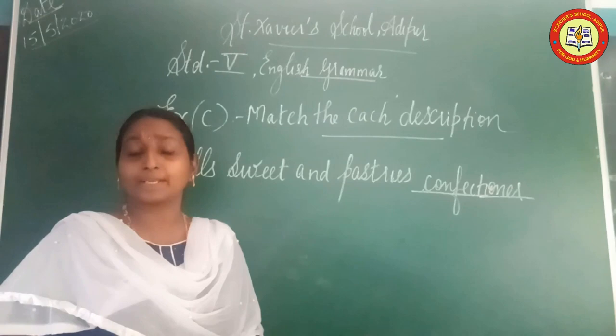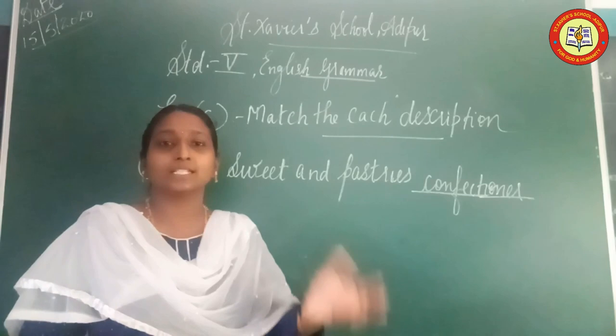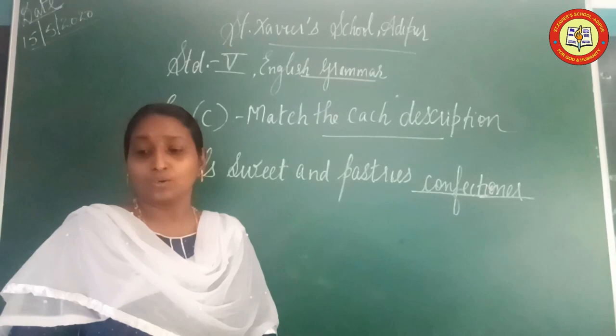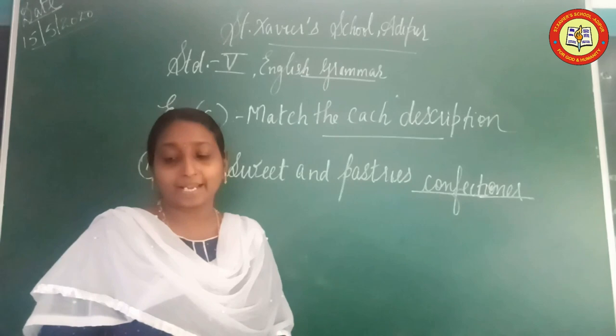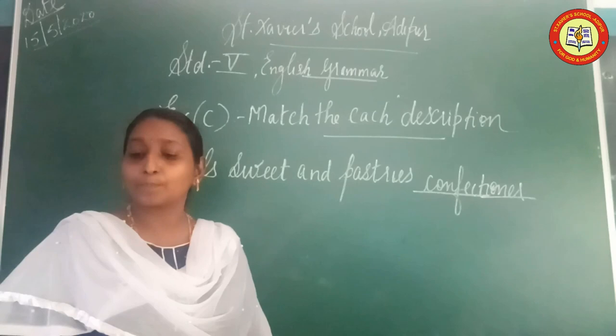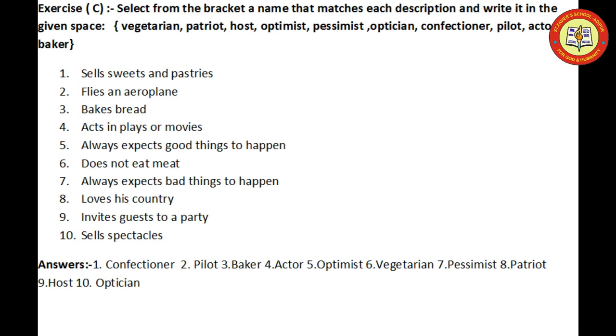Seventh: Always expects bad things to happen. Some people always think something bad will happen. The correct answer is Pessimist. Eighth: Loves his country — a Patriot. Ninth: Invites guests to the party — Host. Tenth: Sells spectacles — Optician.